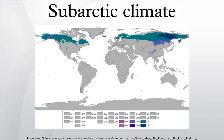The subarctic climate is a climate characterized by long, usually very cold winters, and short, cool to mild summers. It is found on large landmasses, away from the moderating effects of an ocean, generally at latitudes from 50°N to 70°N, poleward to the humid continental climates.